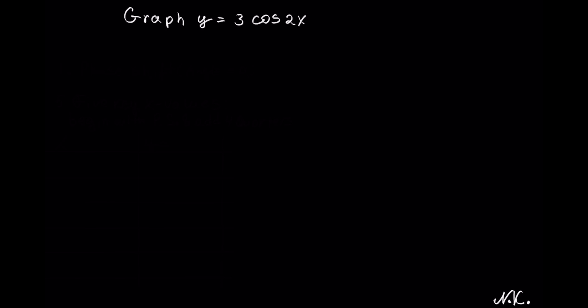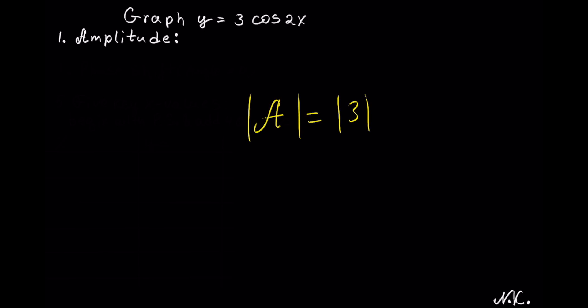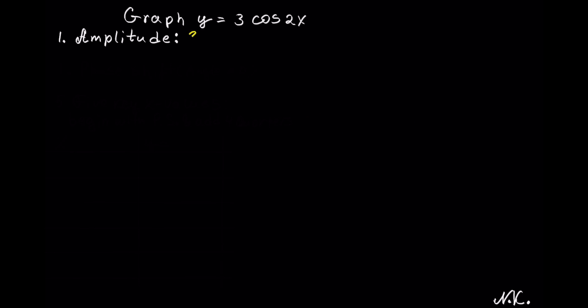Hello! In this video we will be graphing y equals 3 cosine of 2x. The first thing we need to do is calculate the amplitude. We take the coefficient of cosine and take the absolute value of it, which always produces a positive value. The coefficient of cosine is 3, and the absolute value of 3 is 3, so the amplitude is equal to 3.